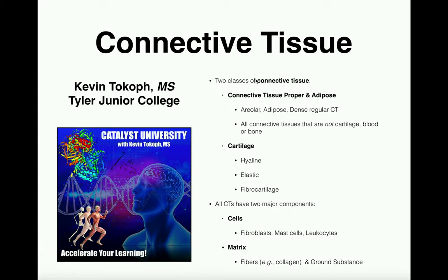For connective tissues, there are two major classes we're going to talk about: connective tissue proper and adipose. Adipose tissue is not technically a part of connective tissue proper, but basically connective tissue proper and adipose is going to be everything except for cartilage, blood, and bone. The ones we're going to look at in this larger category are areolar tissue, also called loose connective tissue, adipose tissue, and dense regular connective tissue.